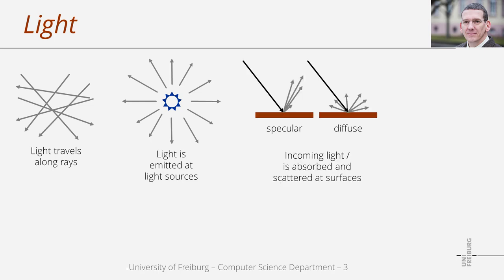These photons move through space, and at surfaces we have some interaction. Dependent on the reflection properties of a surface patch, light is partially scattered and partially absorbed. Here, for instance, we have a red surface. The black arrow indicates some incoming light, and the gray arrows indicate the amount of reflected light into the respective directions. The actual reflection pattern depends on the surface material. If the surface is dark, less light is reflected.